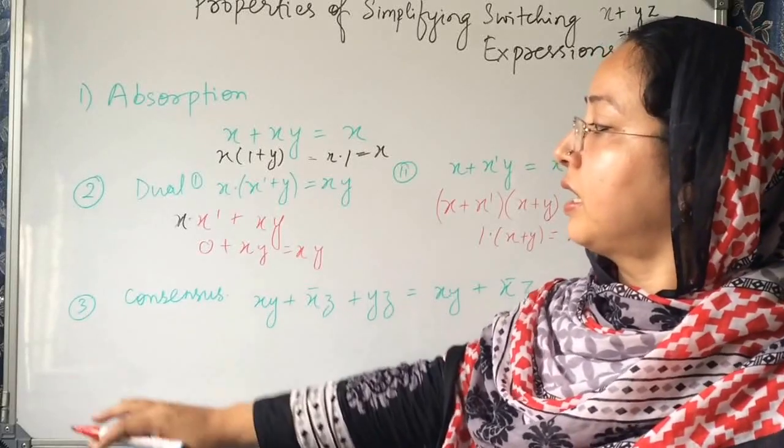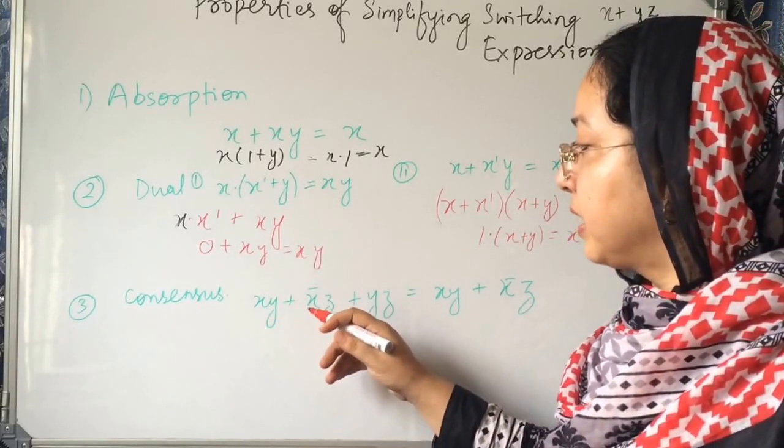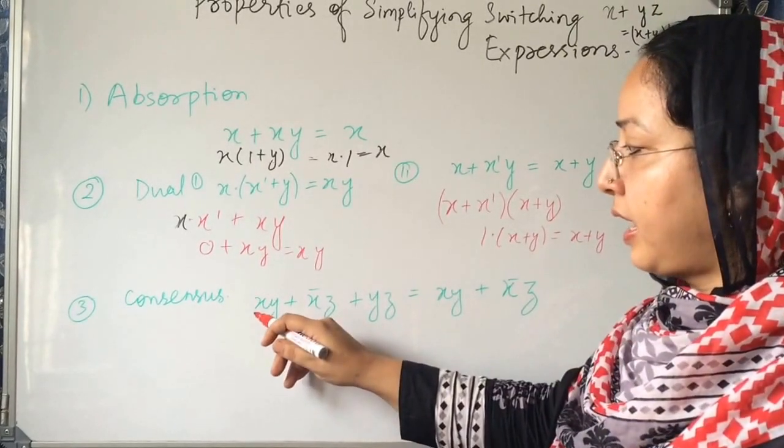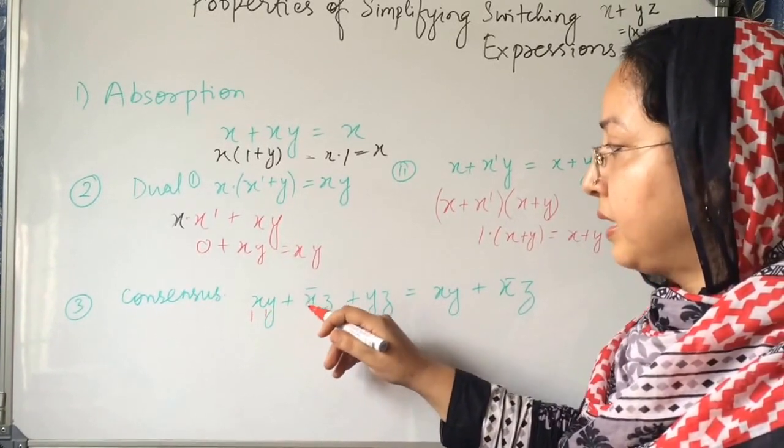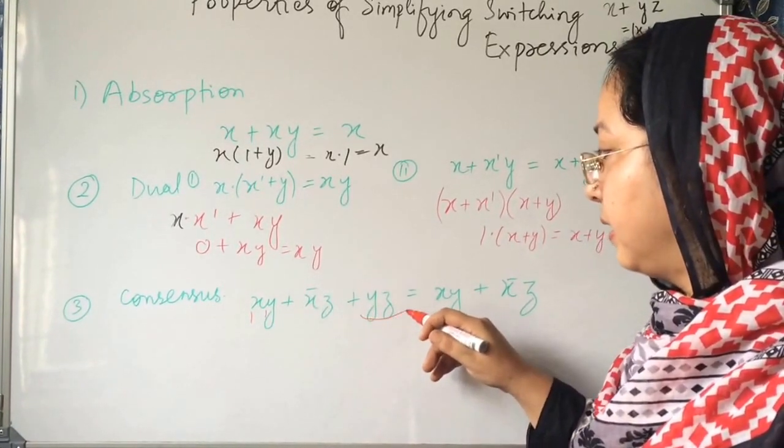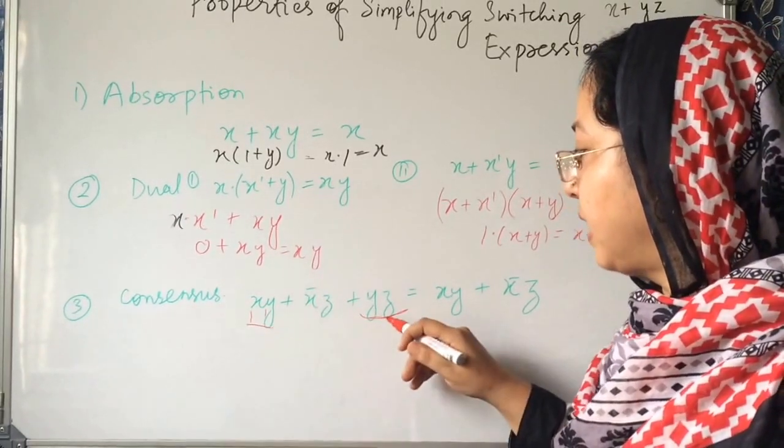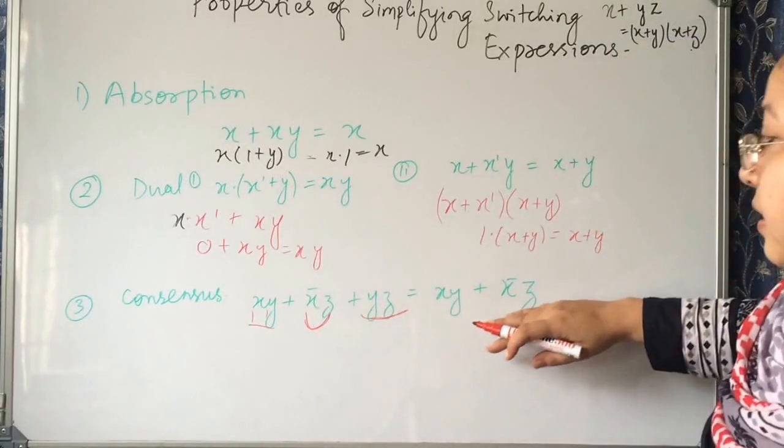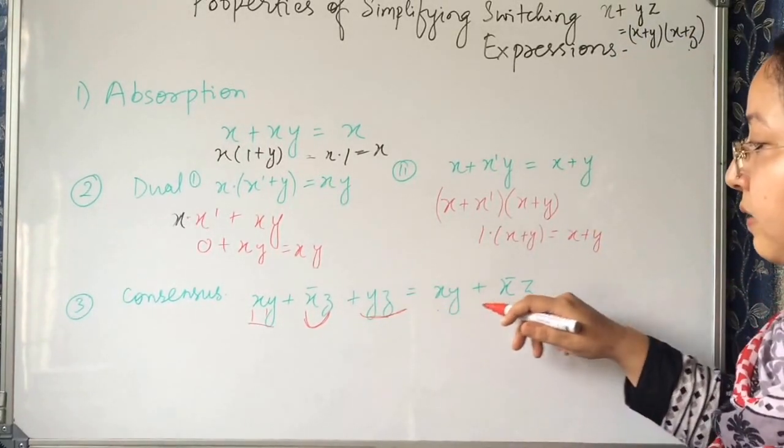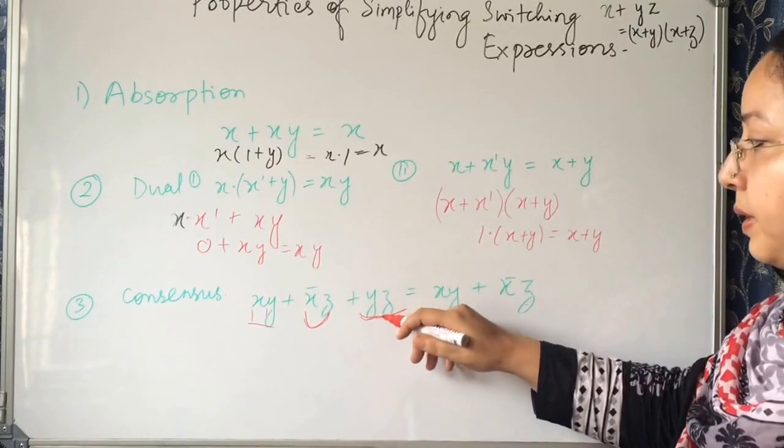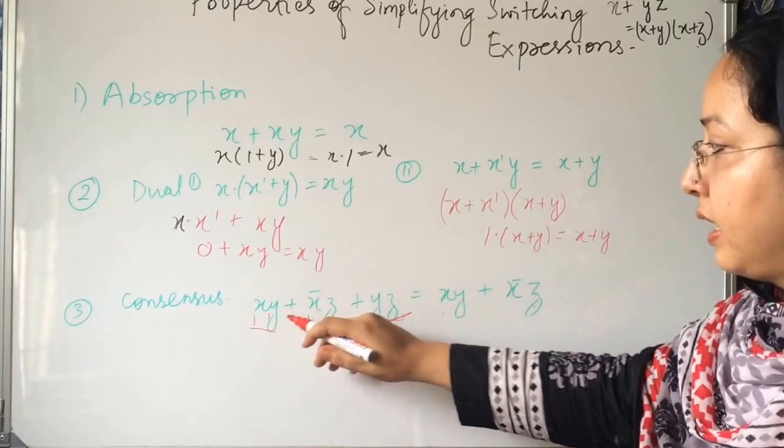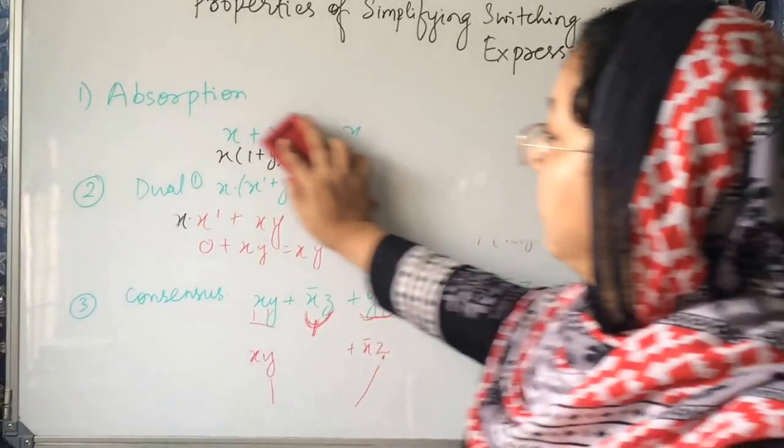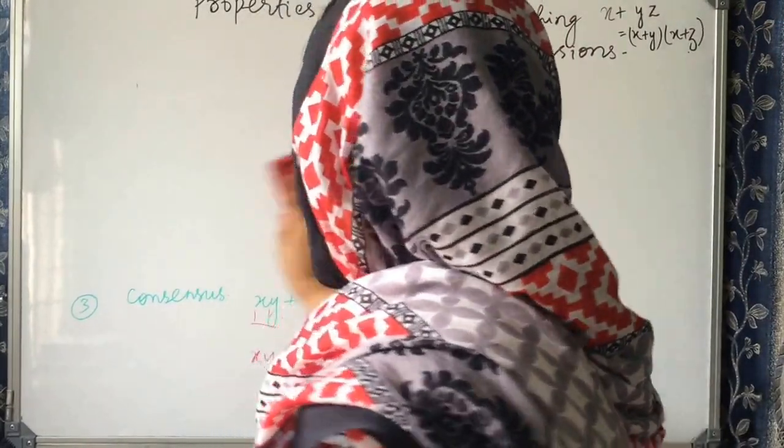Now, third property is consensus which says that xy plus x bar z plus yz is equal to xy plus x bar z. Means x and y plus x bar z plus yz. xy, yz. And here is this term on the right hand side. xy and x bar z is there, but yz has been removed. xy and x bar z remain there. yz has been removed.